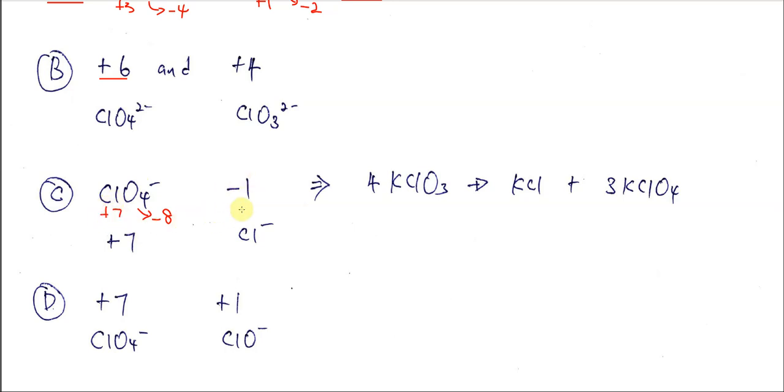And negative 1 is easy, it's just chloride. If you try to use these two anions, the compound is KClO4 for this one and KCl for this one.